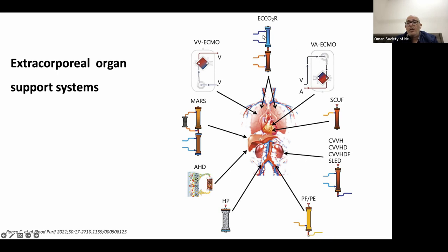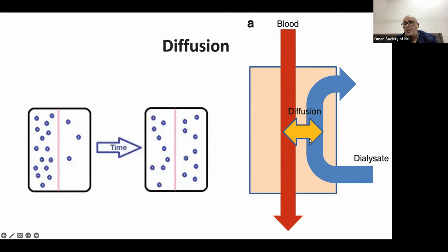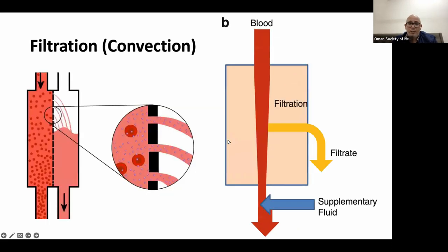Starting with the basic technique: dialysis. Its cornerstone is diffusion, which is the passive movement of solute from an area of high concentration to an area of low concentration. As shown in the graph, diffusion alone will not affect blood volume and does not require replacement fluid. By time it reaches equilibration, nothing further benefits the patient. That is why we utilize the counter-current system — where blood and dialysate move in opposite directions — one of the miracles present in our kidney.